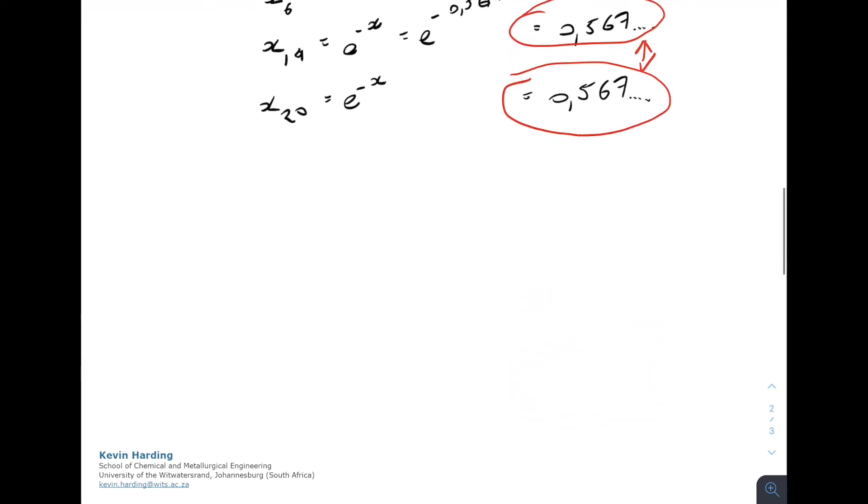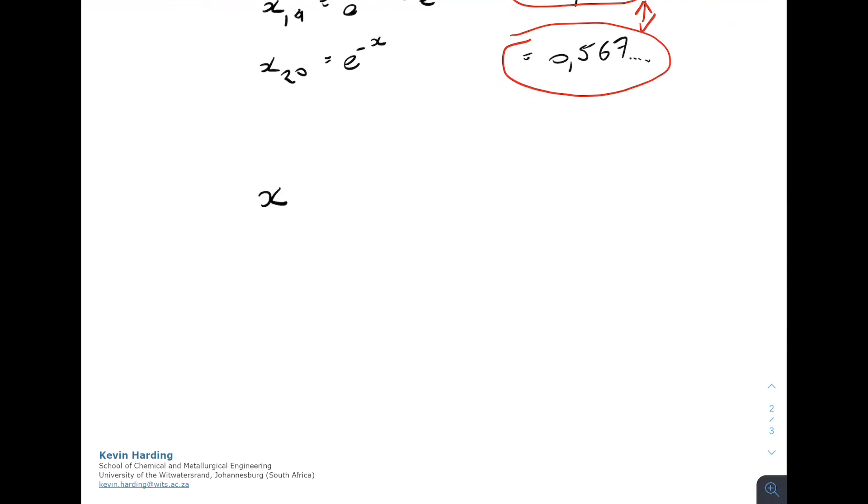Okay, and I've just gone away and just come back to check. So if I do this on Excel, so Excel makes this rather easy. By the time I get to x40, the same thing e to the minus x, the final answer for this to decimal places is 0.56714329.